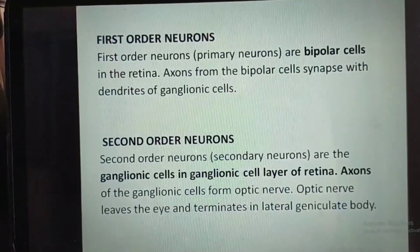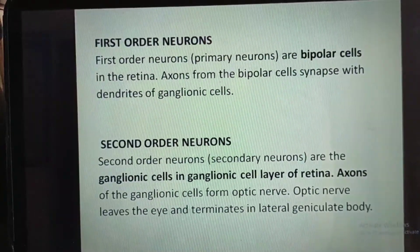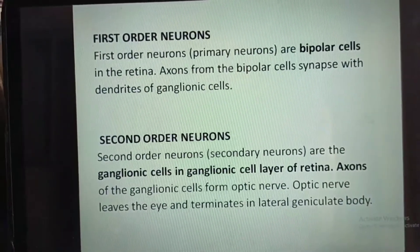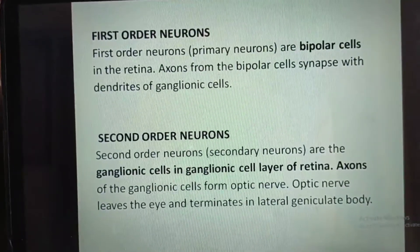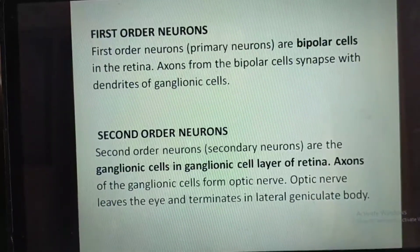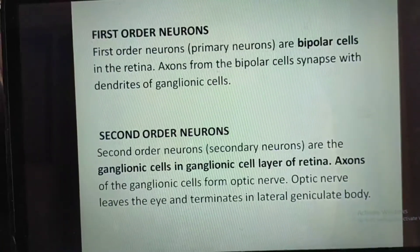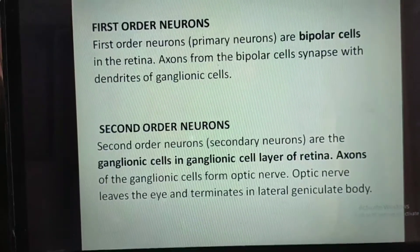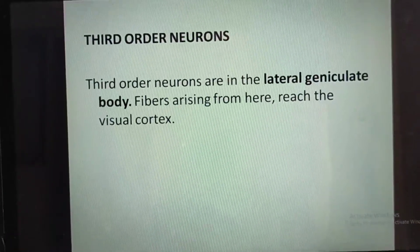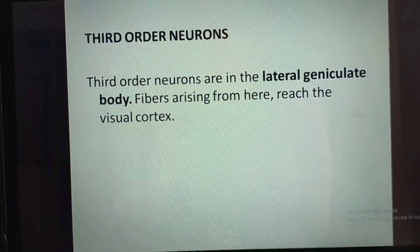First order neurons, or primary neurons, are bipolar cells in the retina. Axons from the bipolar cells synapse with dendrites of ganglionic cells. Second order neurons are the ganglionic cells in the ganglionic cell layer of the retina. Axons of the ganglionic cells form the optic nerve, which leaves the eye and terminates in the lateral geniculate body. Third order neurons are in the lateral geniculate body, and fibers arising from here reach the visual cortex.